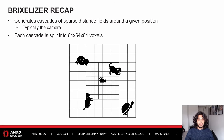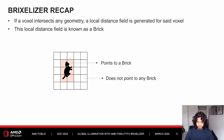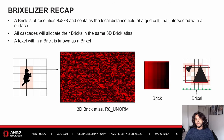Brixelizer generates cascades of distance fields around a given position — in most cases, the camera position. Each cascade is a voxel grid with each axis being 64 voxels in length. If a voxel intersects any geometry, it generates a local distance field within the voxel. These local distance fields are known as bricks. A brick is a 3D texture of size 8×8×8 in R8 UNORM format, and all cascades allocate their bricks from a global brick atlas 3D texture. A texel within a brick is known as a brixel.